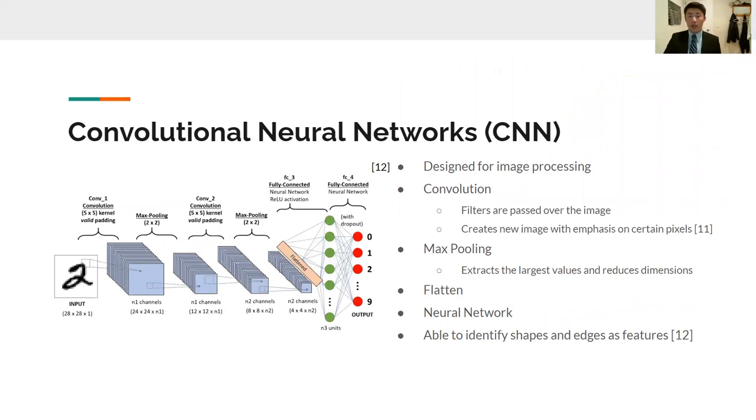Convolutional neural networks, or CNNs, are a subtype of neural network that are designed for image processing. There are two main components. First comes convolution, where filters are passed over the image to create new versions of the image with different pixels emphasized. Then comes pooling, where the highest pixel values are extracted and created and made into a smaller version of the image to reduce computational power necessary. After several layers of convolution and pooling, results are flattened out and passed through neural network. The advantage of the CNN is that it is able to identify spatial features like lines and edges that a regular neural network is unable to capture.